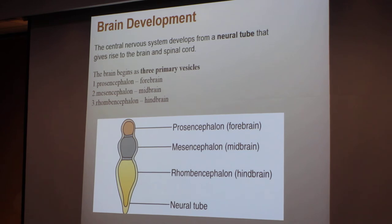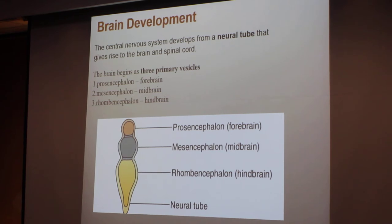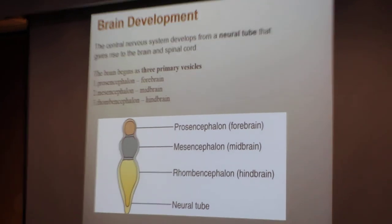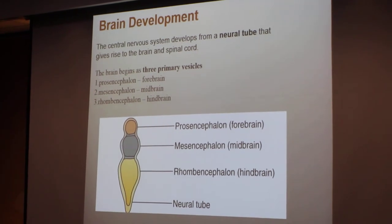The neural tube gives rise to the brain and spinal cord. At the beginning, it begins with three primary vesicles: the prosencephalon, which gives the forebrain, the mesencephalon, and the rhombencephalon.